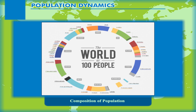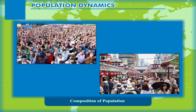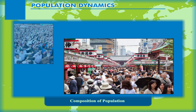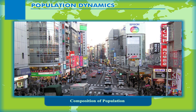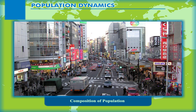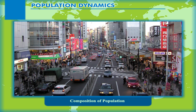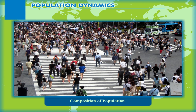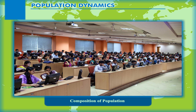Composition of Population. The size of population has little to do with its level of economic development. For example, both Bangladesh and Japan are very densely populated, but Japan is far more economically developed than Bangladesh. This is an important factor in understanding the resource value of population. People vary greatly in their age, sex, literacy level, health condition, and income level. It is necessary to understand these characteristics of the people.